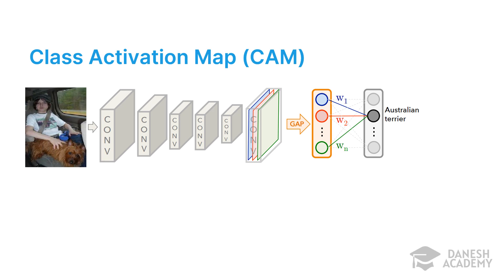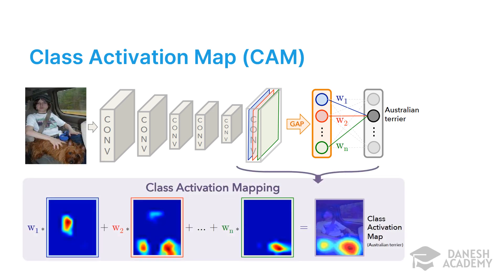Class activation maps help explain which regions of an image are important for predicting a specific class. In a typical CNN, if there are N different filters in the last convolutional layer, there will be N different feature maps. The activation map for a specific output class is a weighted combination of all these feature maps. As shown on screen, the output CAM shows which part of the image has the most influence in estimating the label — in this sample, a dog — as the output classification result.